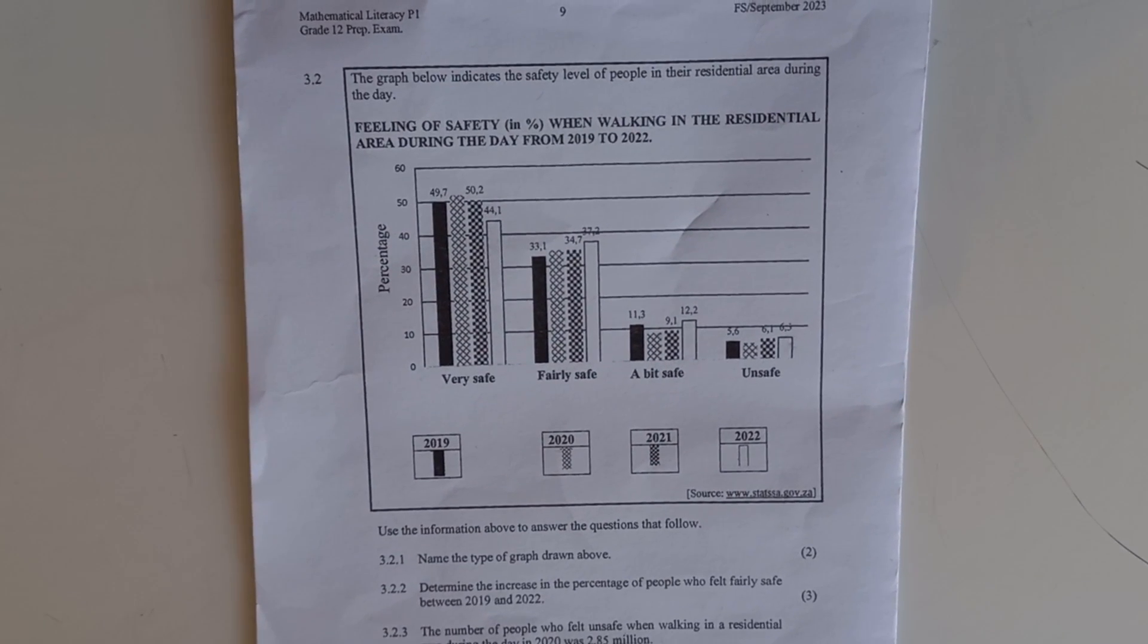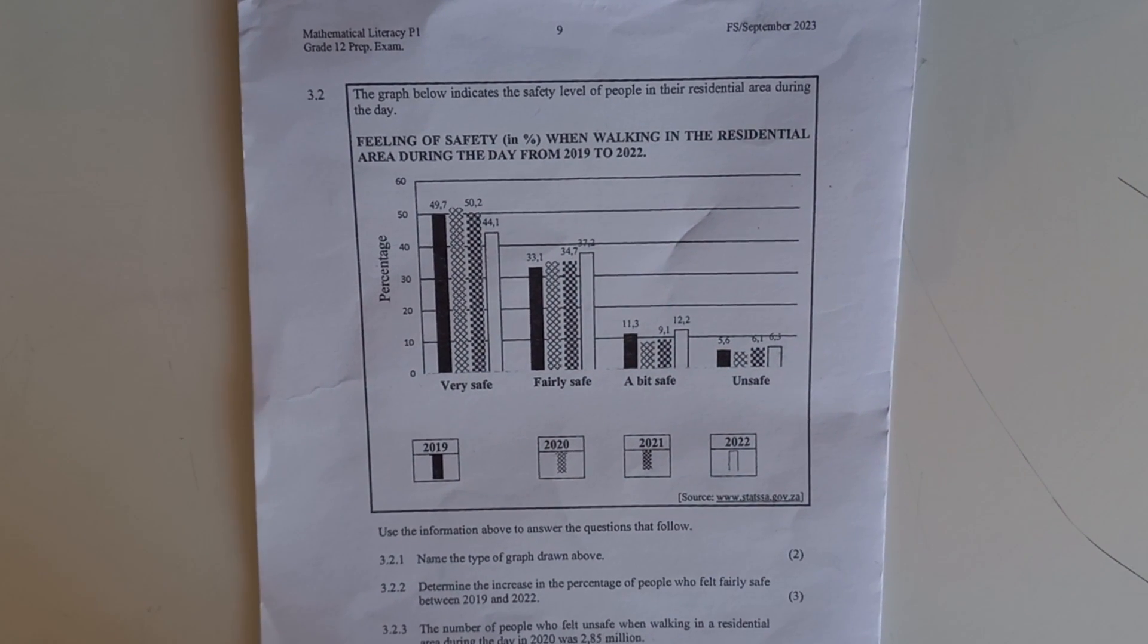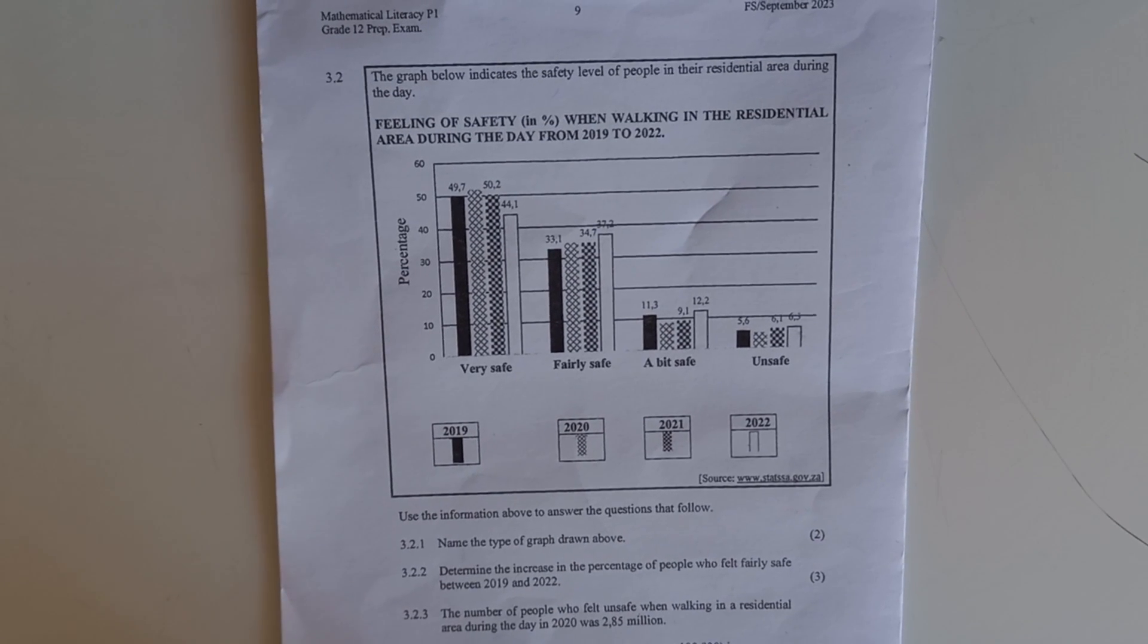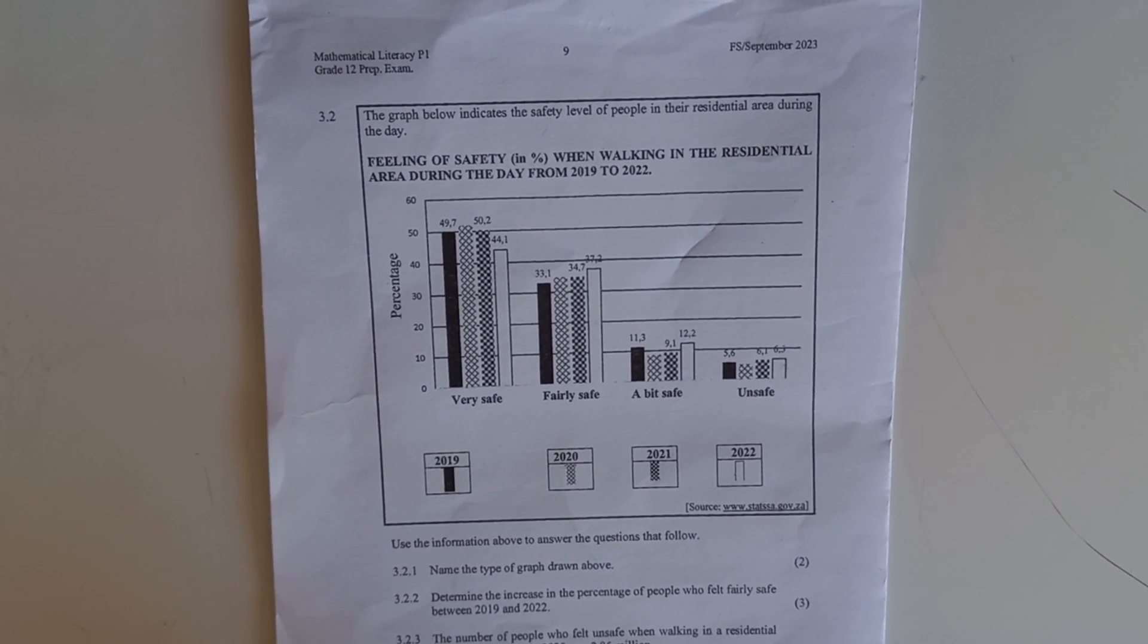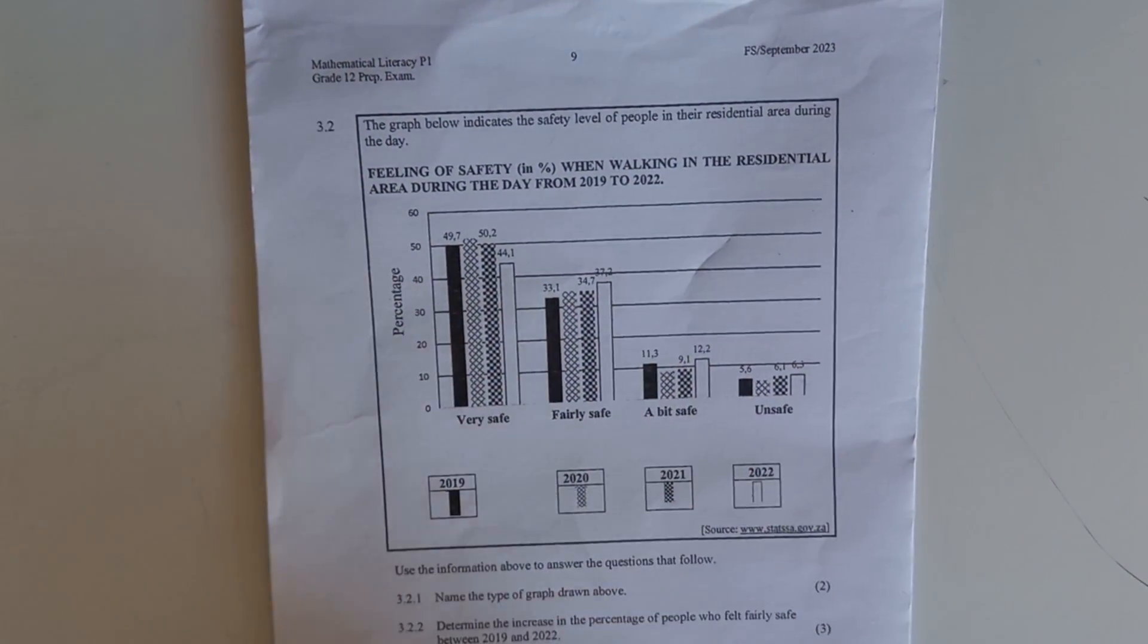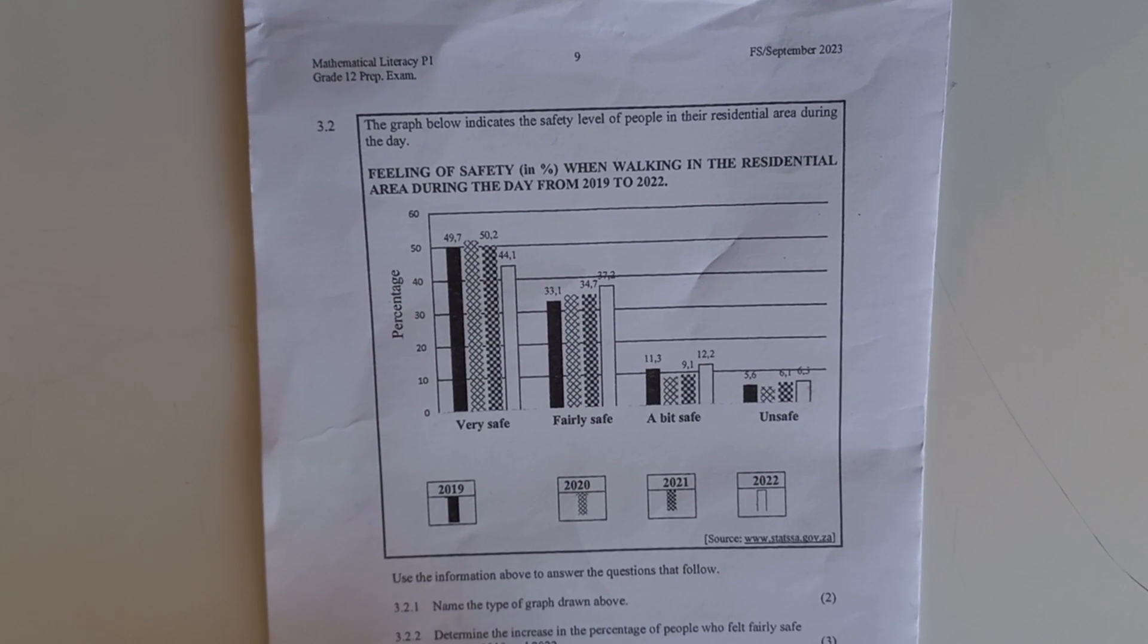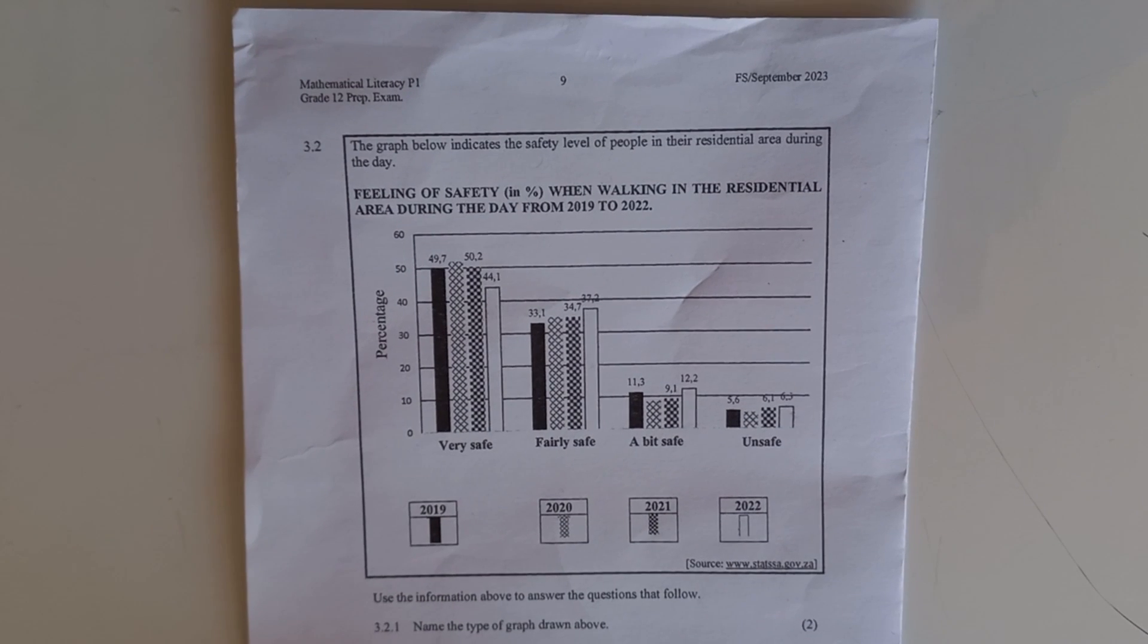The question was on graphs. The graph was all about feeling of safety in percentage when working in the residential area during the day from 2019 to 2022. The black one is 2019. The scotch one is 2020. The other one is 2021. And the clear one is 2022.